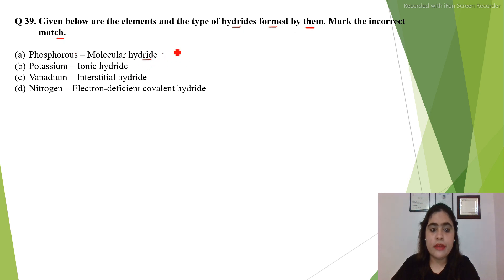Phosphorus forms a molecular hydride here. Phosphorus does form a molecular hydride of the form PH3. It's a covalent hydride, but it doesn't form PH5.